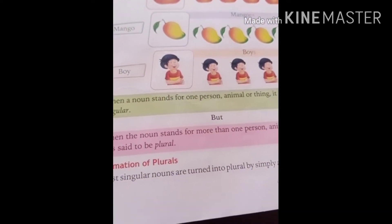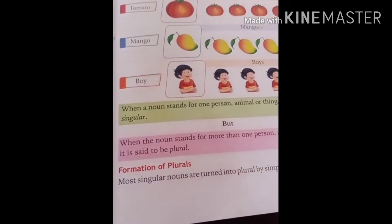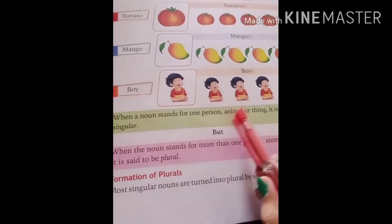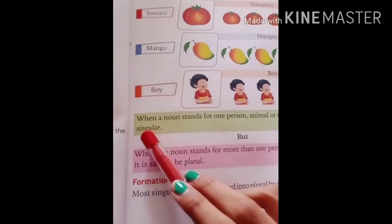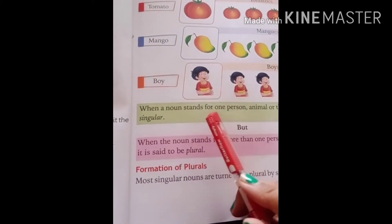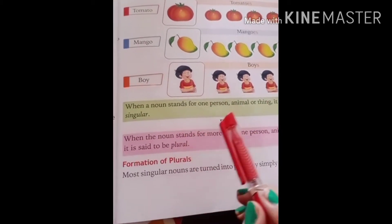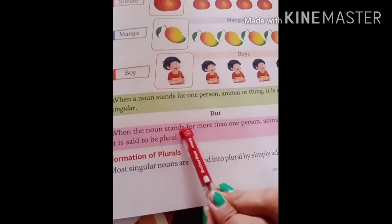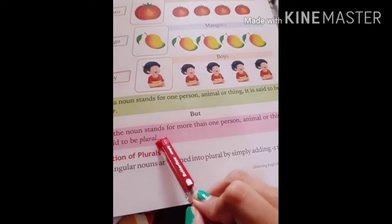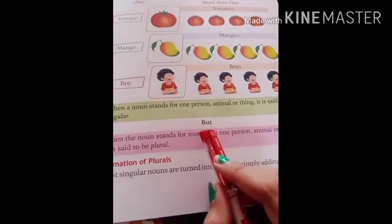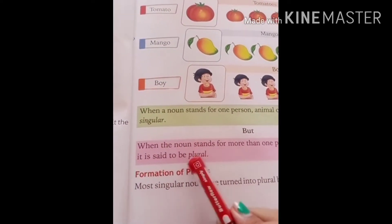When a noun stands for one person, animal, or thing, it is said to be singular. When the noun stands for more than one person, animal, or thing, it is said to be plural.